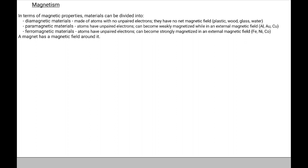Magnets have magnetic fields around them. A magnetic field is measured in Tesla. There is another unit we can use for magnetic field — it's not the SI unit, it's called the Gauss. So 1 Gauss (1 G) is 10 to the negative 4 Tesla.